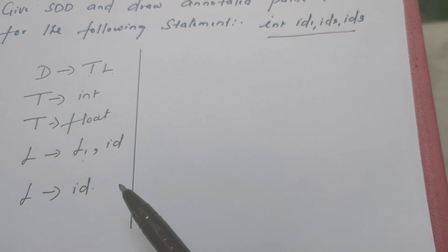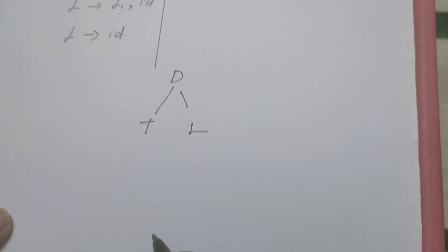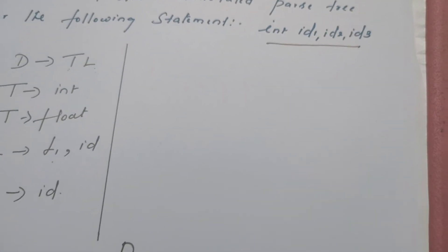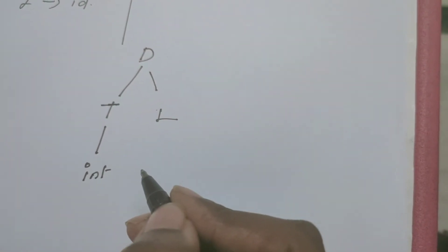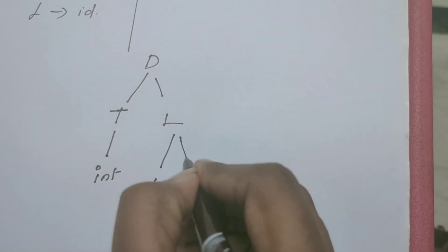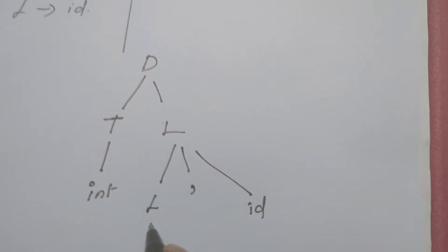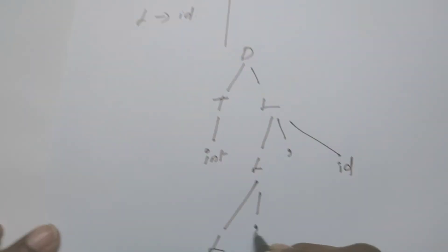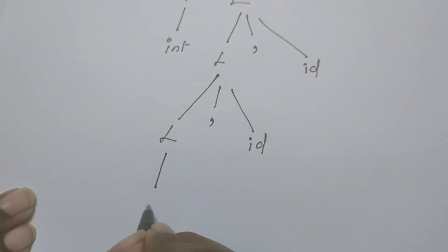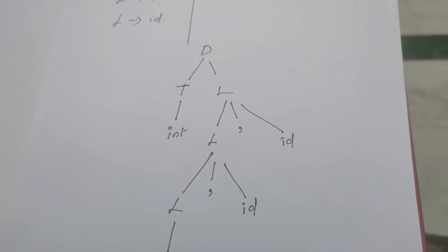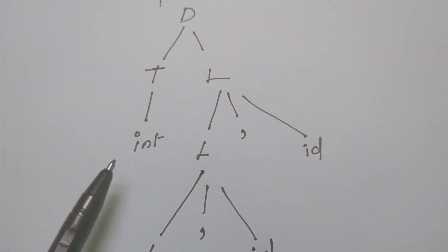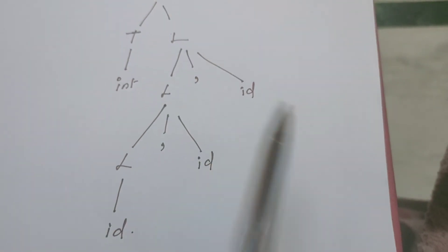As usual, the first step is to draw the parse tree for the given string. D is the root of the parse tree. From D, it is expanded as T and L. T must be replaced by int. Since there are three identifiers, L is expanded as L comma ID, further L as L comma ID, and finally this L can be replaced by ID. So we have constructed the parse tree. Looking at the leaves — int, ID, ID, ID — we obtain the string.